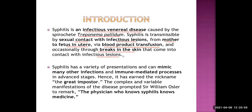To summarize: the most common modality is sexual contact with the partner; another is vertical transmission; third is via blood product transfusion if not properly screened; and even through breaks in the skin in direct contact with an infectious lesion. Syphilis has a variety of presentations and can mimic many other infections and immune-mediated processes in advanced stages. It is divided into different stages: stage 1, stage 2, and stage 3 — which includes cardiovascular syphilis and neurosyphilis. Hence, it has the nickname of great imposter or great mimicker.